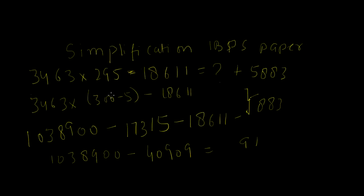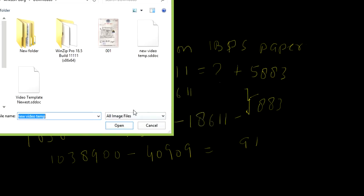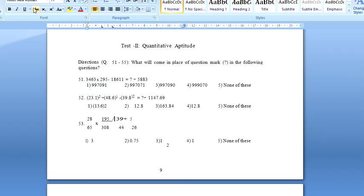Before starting with the second question, I will change the screen. So the second question is 23.1 square plus 48.6 square minus 39.8 square is equal to question mark plus 1147.89. To solve such kind of questions, we need to know the square. So 23.1 square is 529.